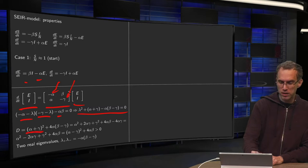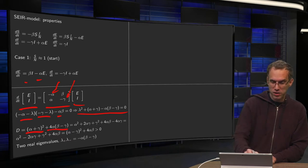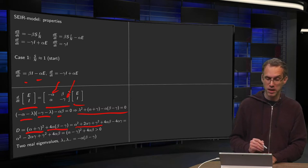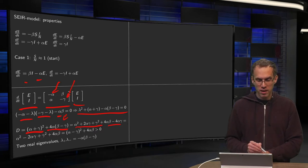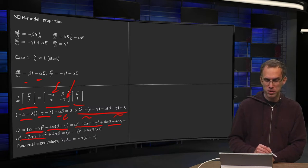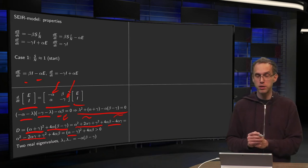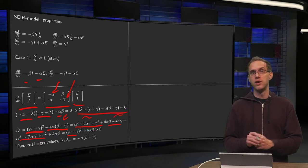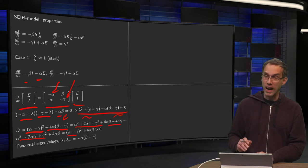That's B squared minus 4 times A times B over here. Work out the brackets. You get alpha squared plus 2 times alpha times gamma plus gamma squared. And from here we get 4 alpha beta minus 4 alpha gamma. We can take these two terms together. We get alpha squared minus 2 alpha gamma plus gamma squared plus 4 alpha beta. And the first three terms can be taken together as alpha minus gamma squared plus 4 alpha beta which is positive. So our discriminant is positive which means that we will have two real eigenvalues.